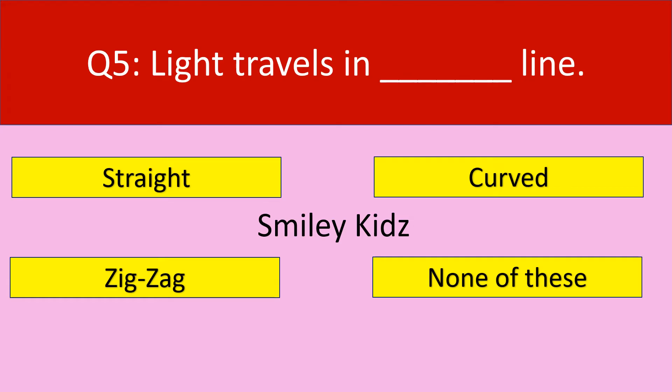Question number 5. Light travels in a dashed line. Your options are: Straight, Curved, Zigzag, None of these.